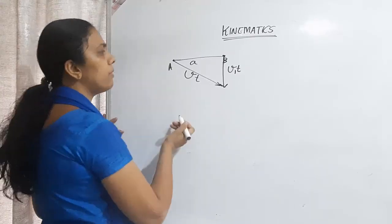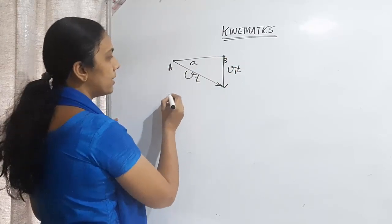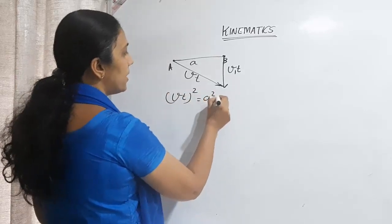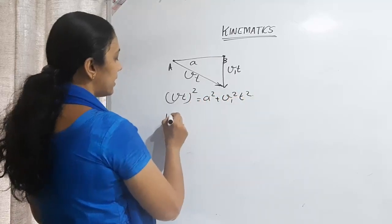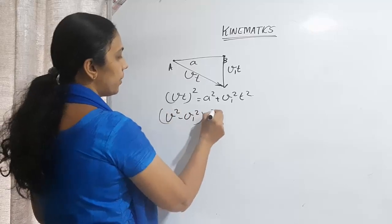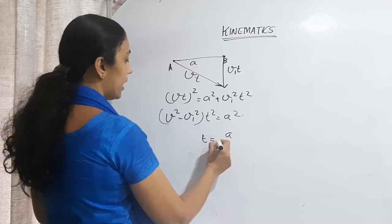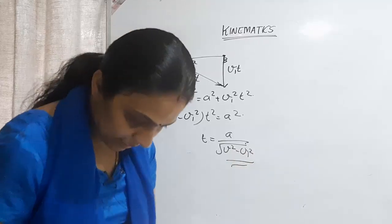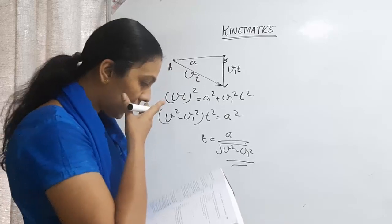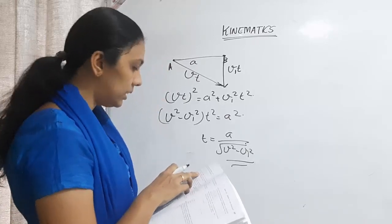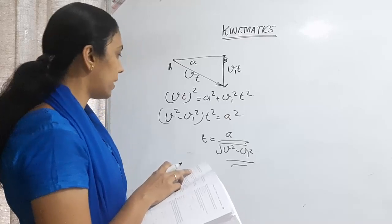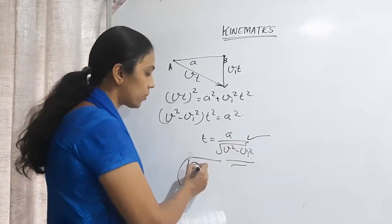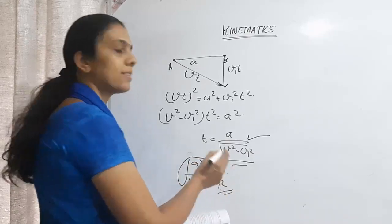We need to find t. Applying the Pythagorean theorem to the right-angled triangle formed: (vt)² = a² + (v₁t)². This gives v²t² - v₁²t² = a², so (v² - v₁²)·t² = a². Therefore t = a / √(v² - v₁²), which can also be written as √(a² / (v² - v₁²)). The correct answer is option b.